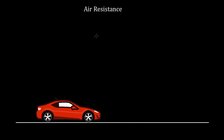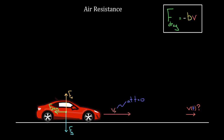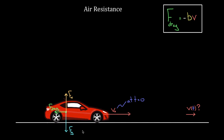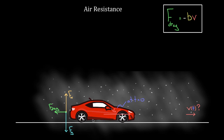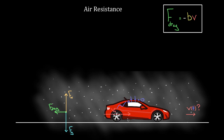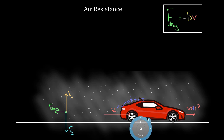Let's try to solve one of these air resistance problems. Say you're driving in your car and you start with some initial speed v-naught at t equals zero. You take your foot off the gas at time t equals zero, and at that moment you're traveling at this speed v-naught.